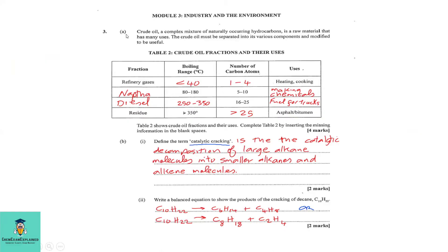Question 3, part a: Crude oil is a complex mixture of naturally occurring hydrocarbons and is a raw material that has many uses. The crude oil must be separated into its various components and modified to be useful. Here we have a table of crude oil fractions and their uses, and we are required to fill in the empty spaces.